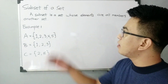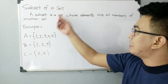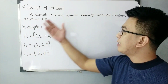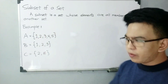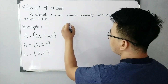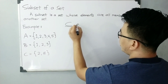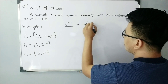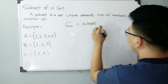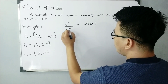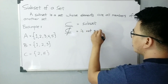So we have here subset. Let's talk about subset of a set. A subset is a set whose elements are all members of another set. You will be dealing with this kind of symbol. This symbol means subset — symbol for subset. And this other symbol means not a subset.